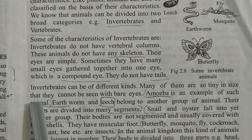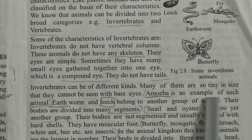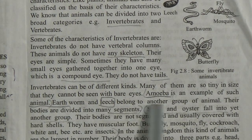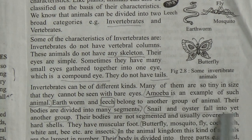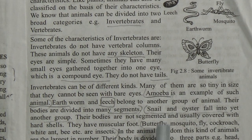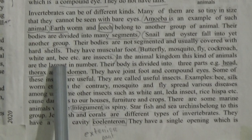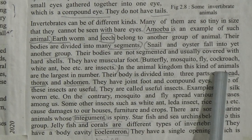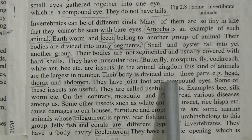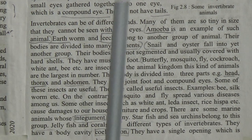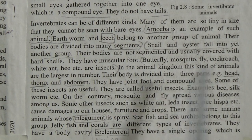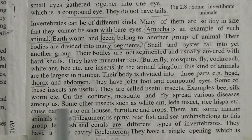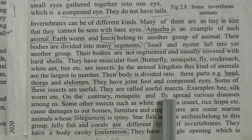Invertebrates can be of different kinds. Many are so tiny that they cannot be seen with bare eyes — amoeba is an example. Earthworm and leech belong to another group whose bodies are divided into many segments. Snail and weston fall into yet another group — their bodies are not segmented and are usually covered with shells; they have a muscular foot. Butterfly, mosquito, fly, cockroach, white ant, bee, etc. are insects. Their body is divided into three parts: head, thorax, and abdomen. They have jointed feet and compound eyes.